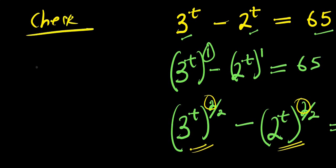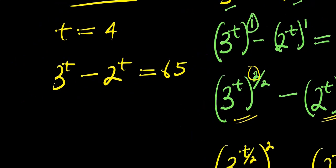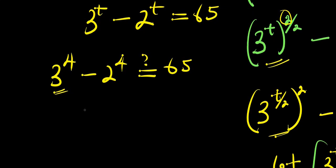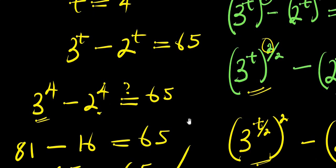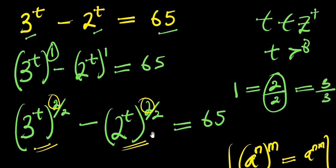Let's check: substituting t equals 4 into the original equation, 3^4 minus 2^4 equals 65. We have 3^4 equals 81, and 2^4 equals 16. So 81 minus 16 equals 65, which matches the right-hand side. The answer is correct: t equals 4.